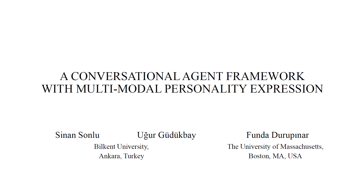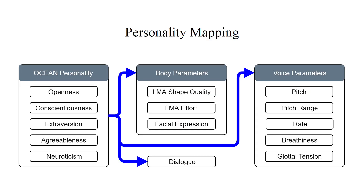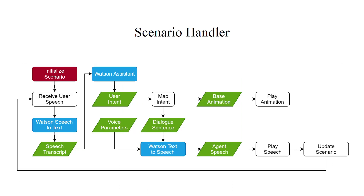We propose a conversational virtual agent framework that expresses the desired personality through animation modification, facial expression adjustment, dialogue selection, and voice transformation. We map agent personality into different adjustment parameters based on the literature of expressive agents as well as our experimental findings. The scenario handler selects personality-specific dialogue and an accompanying base animation for the agent.